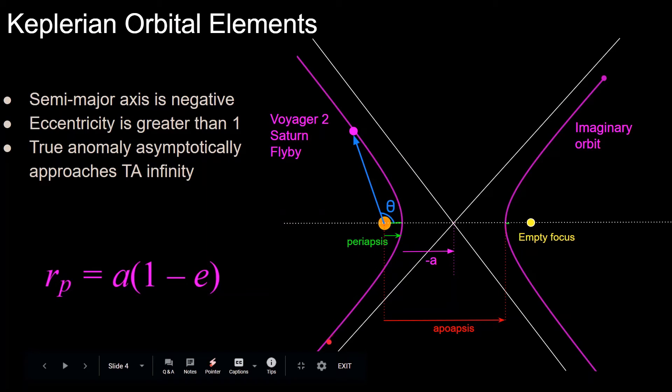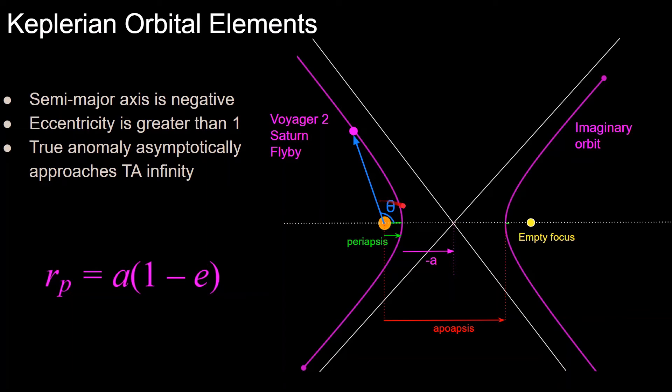So if you have an eccentricity of 2, the trajectory will go something like this, but if you have an eccentricity of 1.1, it'll do something like this, more of a U shape. And then true anomaly is actually defined pretty much the same, as the angle between the vector pointing to periapsis and the position vector, so this angle right here.